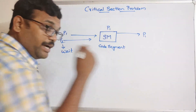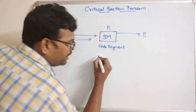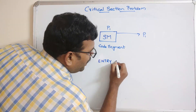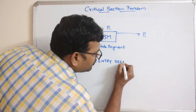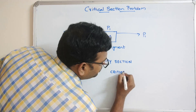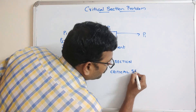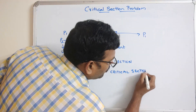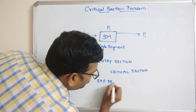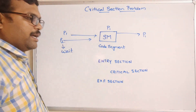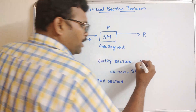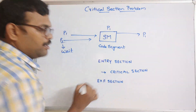This code segment — the critical section — has three parts. The first is the entry section, the second is the critical section itself, and the third is the exit section. If one process is in the critical section, no other process will be allowed to execute.